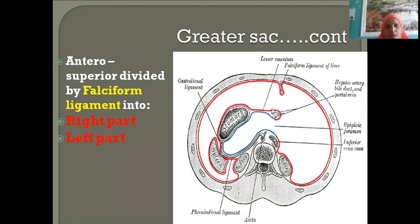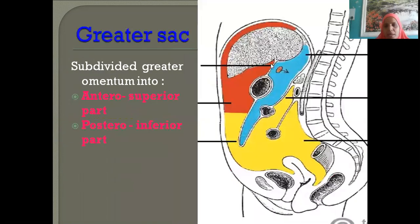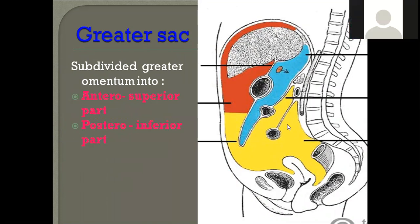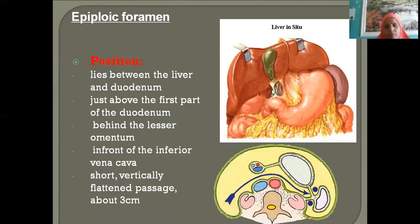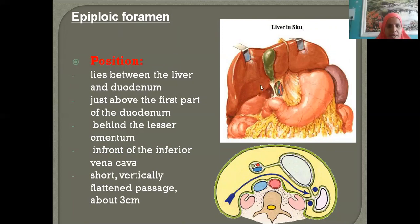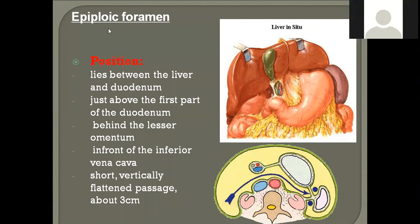A section taken at a higher level shows the supracolic compartment; a section lower down shows the infracolic compartment — both divided into right and left. The epiploic foramen communicates the greater sac with the lesser sac. Its position is between the liver and the first part of the small intestine called the duodenum — between the liver and the first part of the duodenum.